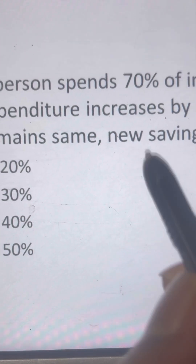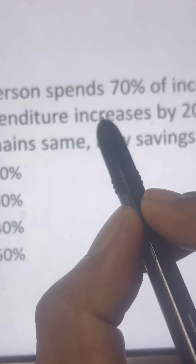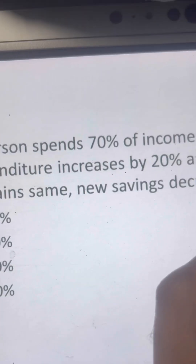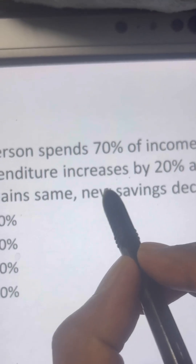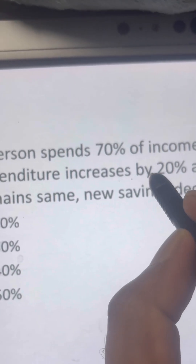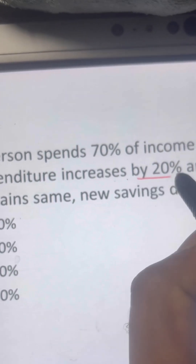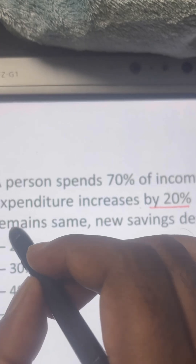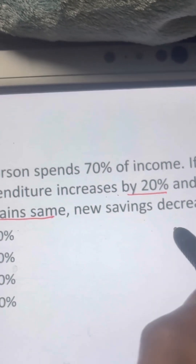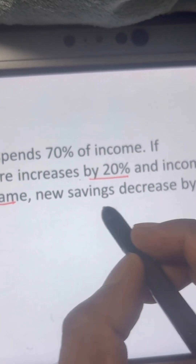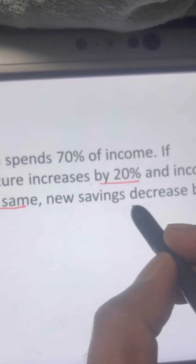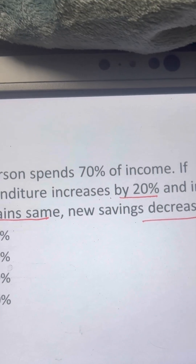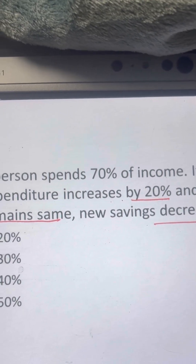Look at this question: a person spends 70% of their income. If expenditure increases by 20% and income remains the same, what is the percentage by which new savings decrease?